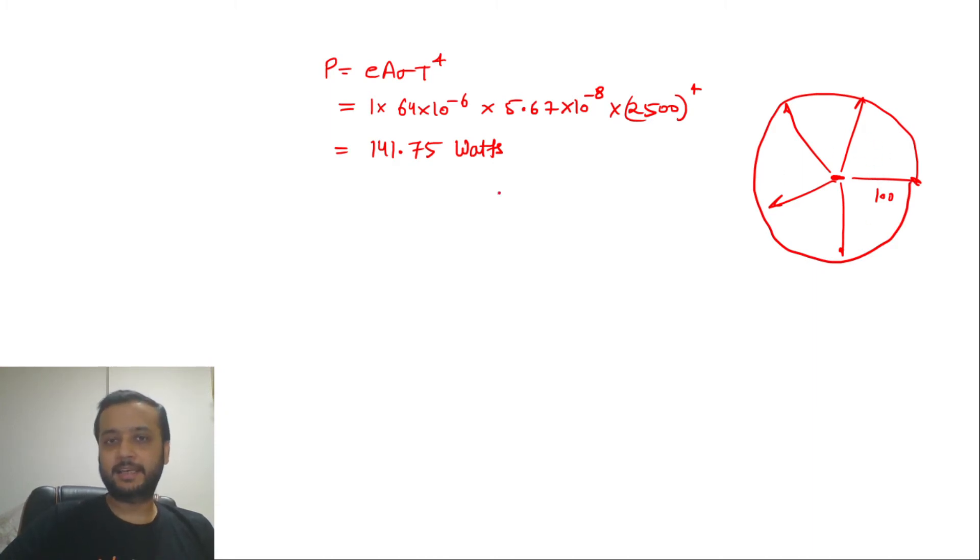So at 100 meters distance, intensity of the light I can calculate. Total this power is divided by 4π × 100². Right? This intensity of light which we have to see here, this pupil radius is 3 mm.